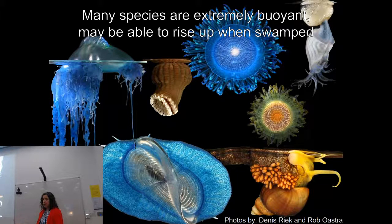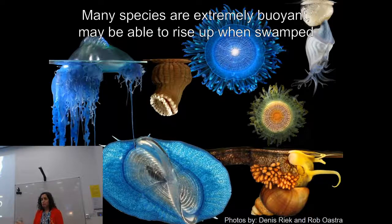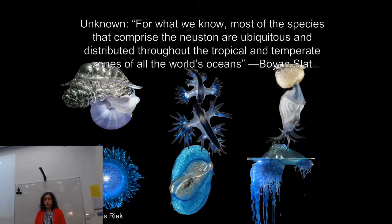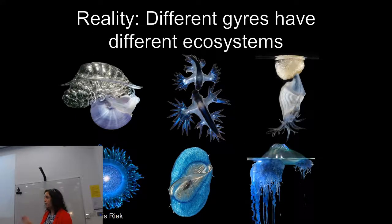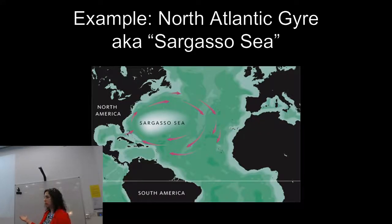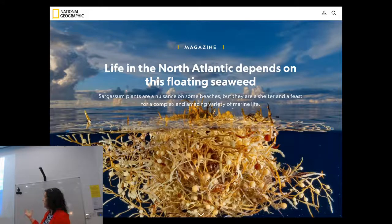Many species at the surface are incredibly buoyant and lightweight, and adapted to being potentially swamped and rising back up — but how much can they tolerate? We have no idea. I've seen Valella get caught in waves and pop back up, but that's the extent of what I know. Boyan Slat has also said that most neuston species are ubiquitous and distributed throughout the tropics and temperate zones, but we really don't have a good handle on species distributions, and we know different gyres have very different ecosystems.